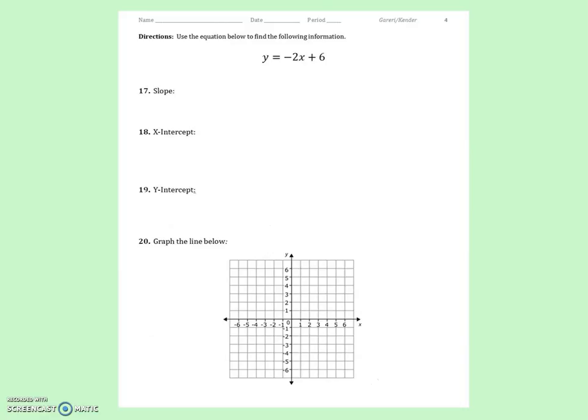Page 4 is the same idea as page 3, except instead of the graph, it gives you the equation. So number 17, identify the slope. Let me just even write here, y equals mx plus b. m represents the slope. The slope here is negative 2.